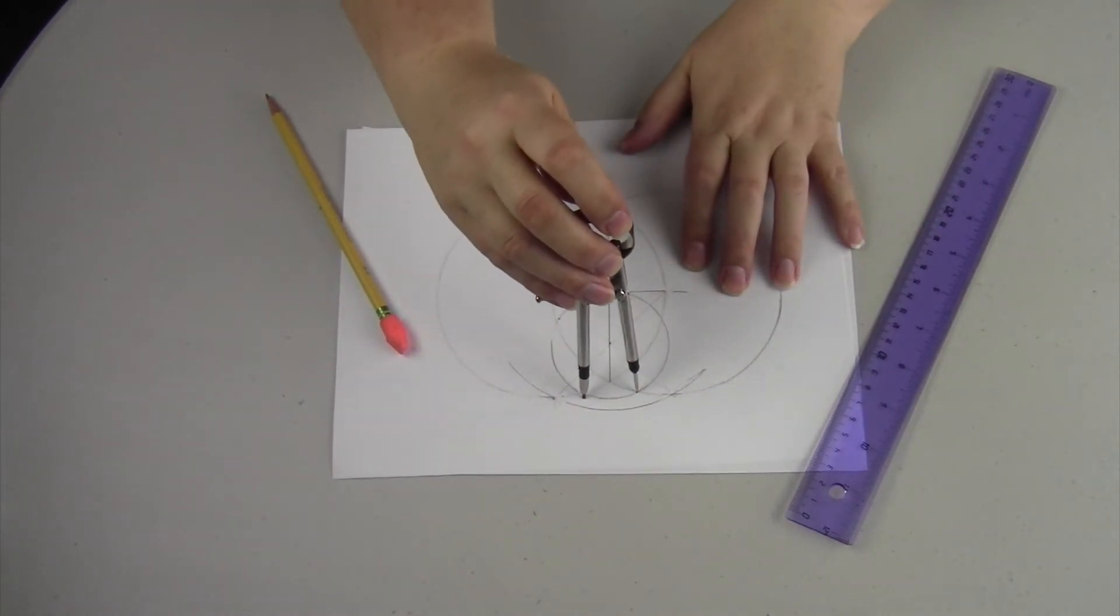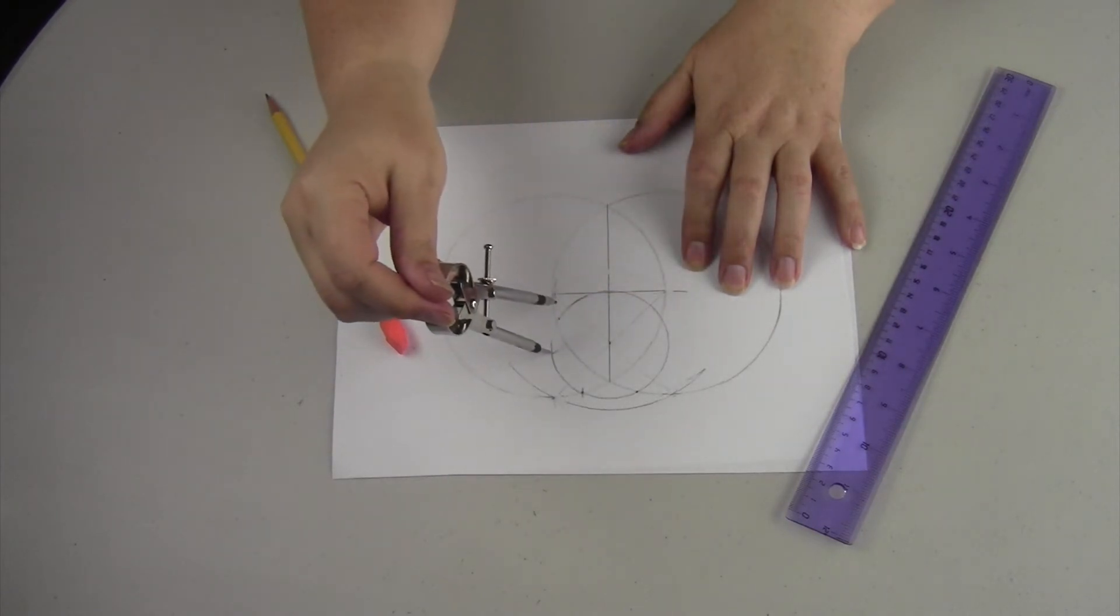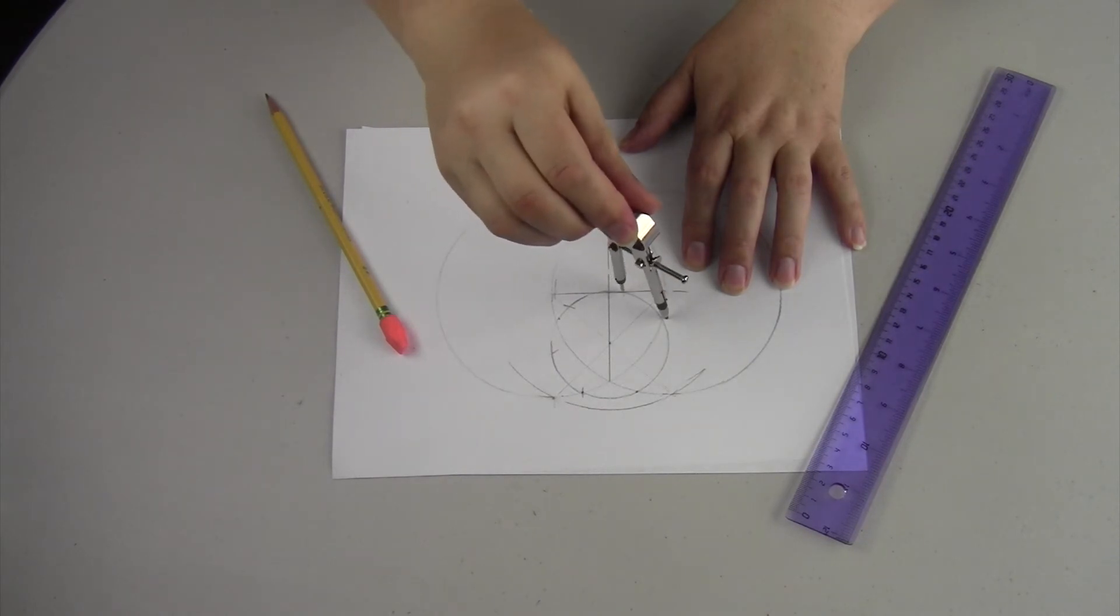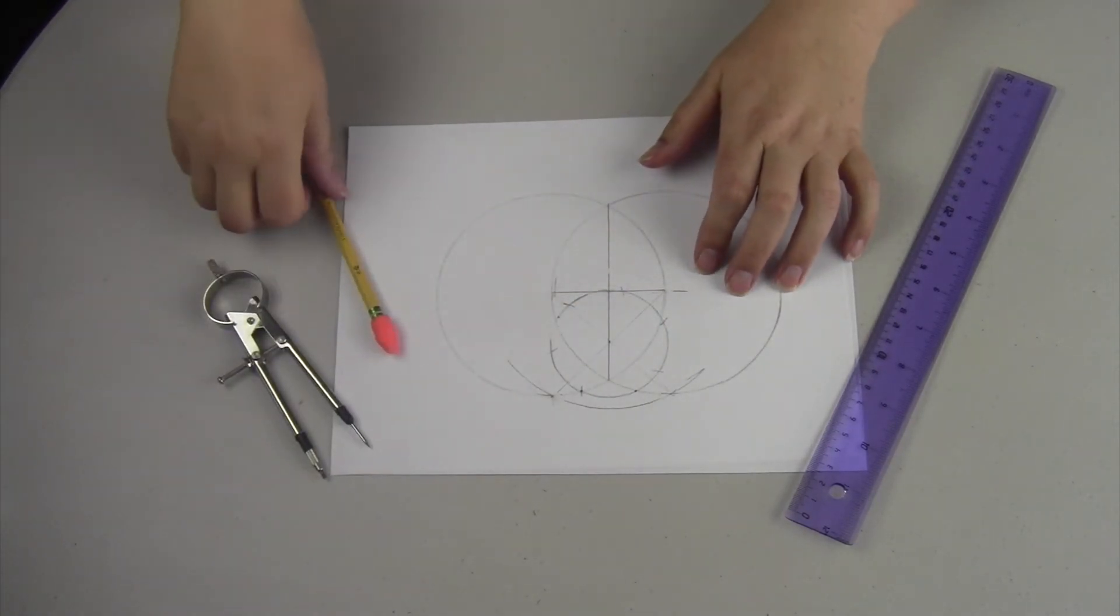Now we're going to do what we call a walk around. We're going to walk around the circle creating a little tick mark and putting a new place. And as we follow it all the way around we're going to create seven places. And then all we have to do is connect them.